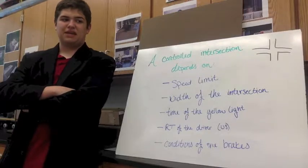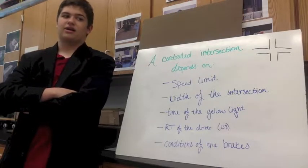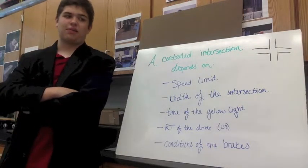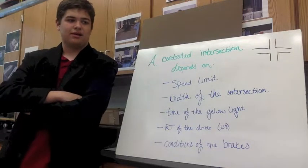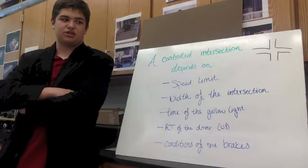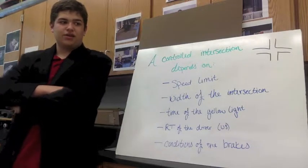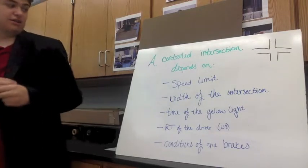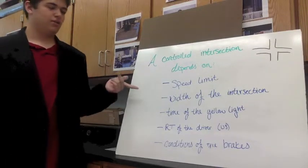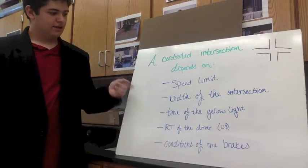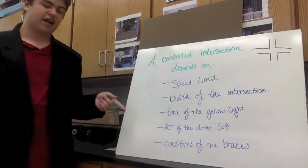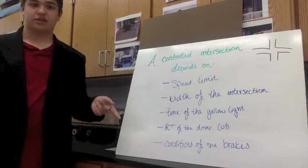Braking distance depends on speed and acceleration of the car. This leads us to dealing with a yellow light problem. The yellow light model is used to design safe intersections controlled by traffic lights. We learned that a controlled intersection is dependent on speed limit, width of the intersection, time of the yellow light, reaction time of the driver, and conditions of the brakes.